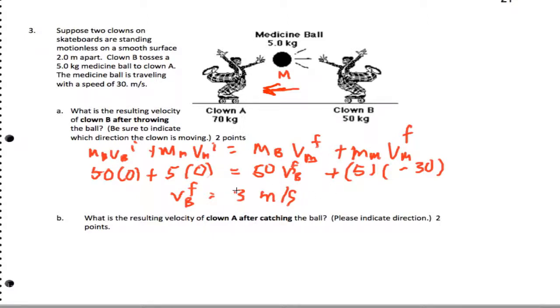Now what happens after clown A catches the ball? So now we need to look at what happens. Now this is moving at 30, the medicine ball that is, in the backwards direction. And A is still to start with.